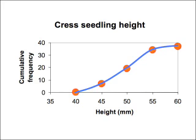Finally, you draw a smooth curve through the points. Don't join the points dot to dot. You can see the smooth S-shaped curve clearly. Most data will give you an S-shaped curve of some kind.